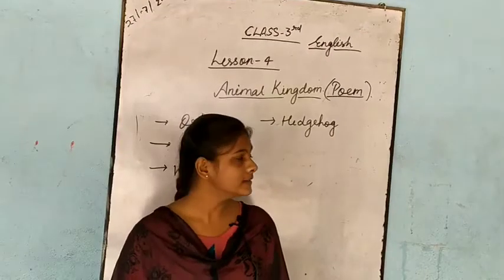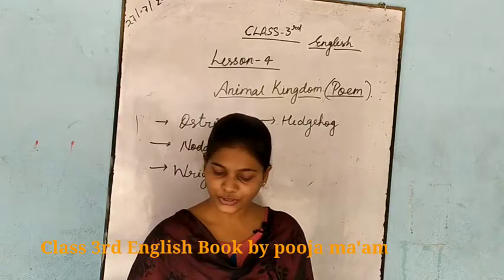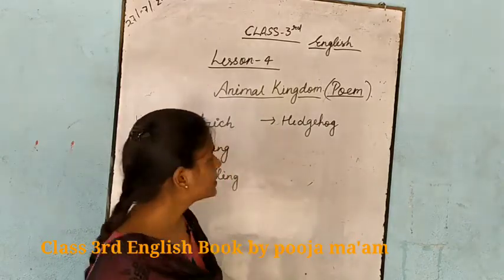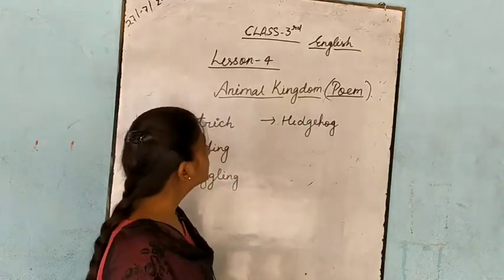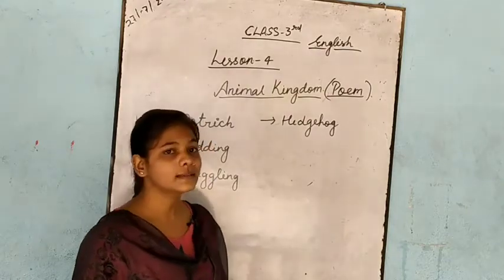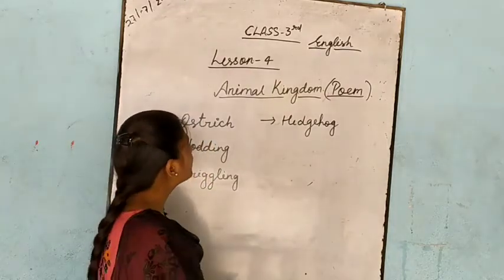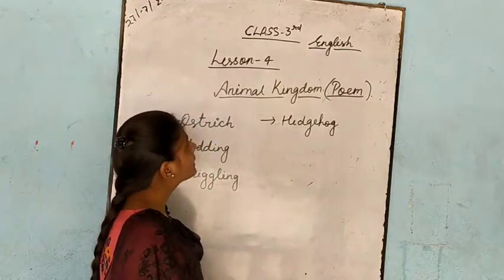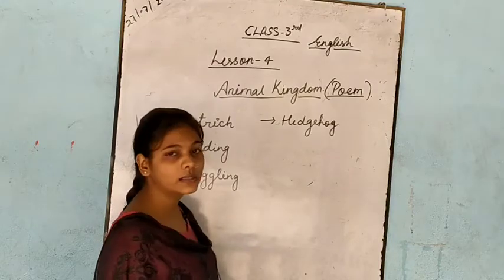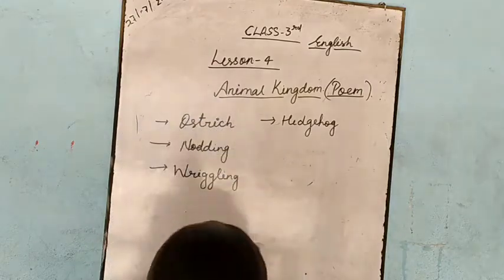Hello children. Today we are going to start Chapter 4 and this is class 3rd English. The chapter's name is Animal Kingdom. This is a poem and we are going to read the poem.